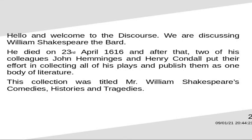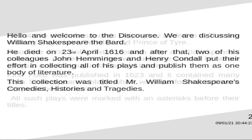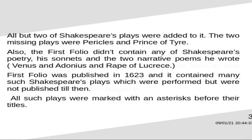This collection was titled Mr. William Shakespeare's Comedies, Histories and Tragedies. All but two of Shakespeare's plays were added to it. The two missing plays were Pericles and Prince of Tyre. Also, the First Folio didn't contain any of Shakespeare's poetry — his sonnets and the two narrative poems he wrote, Venus and Aronius and Rape of Lucrece, none of them was added to the First Folio.